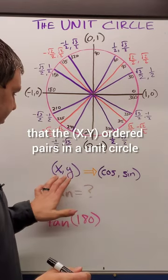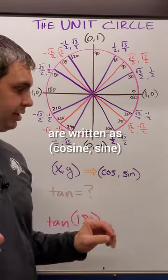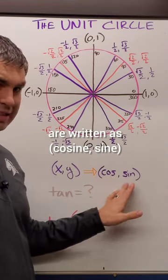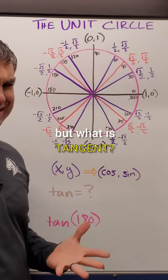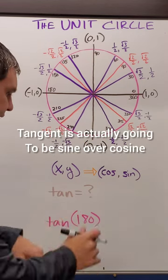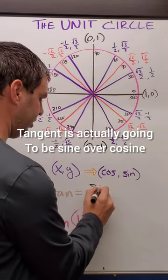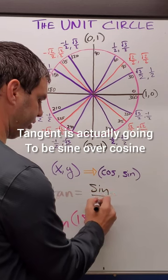Most of you probably already know that the xy ordered pairs in a unit circle are written as cosine, sine. But what is tangent? Tangent is actually going to be sine over cosine.